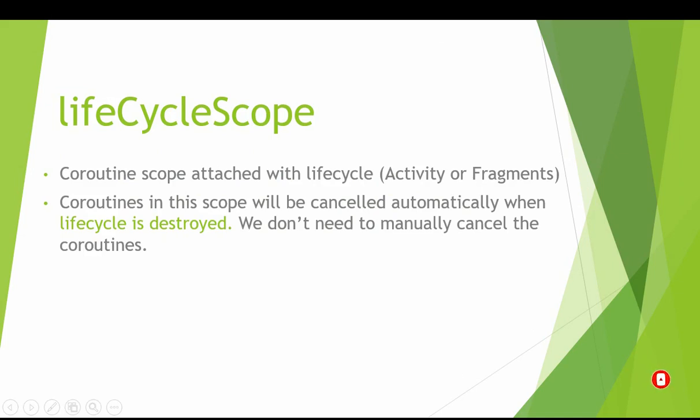lifecycleScope is that type of scope which is attached to the activity or fragment. If the activity is destroyed, the coroutine would also be destroyed. The coroutine in the scope will be cancelled automatically when the lifecycle is destroyed — we don't need to manually cancel it with coroutine.cancel() or anything.